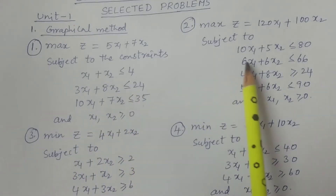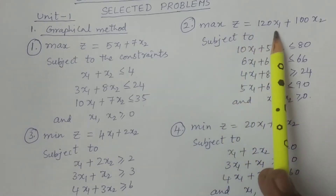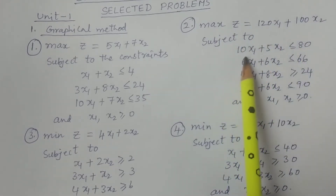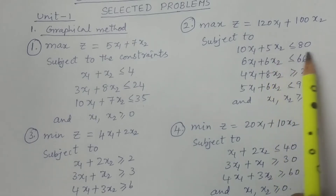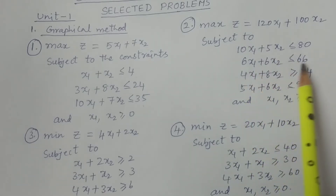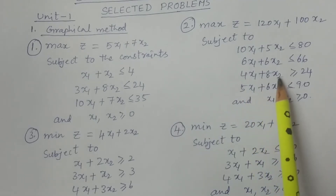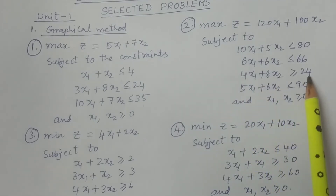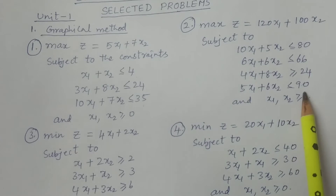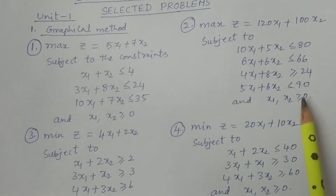The second maximization problem: maximize z = 120x1 + 100x2, subject to constraints 10x1 + 5x2 ≤ 80, 6x1 + 6x2 ≤ 66, 4x1 + 8x2 ≥ 24, and 5x1 + 6x2 ≤ 90. This is the second maximization problem.